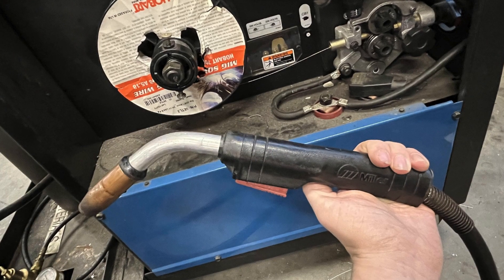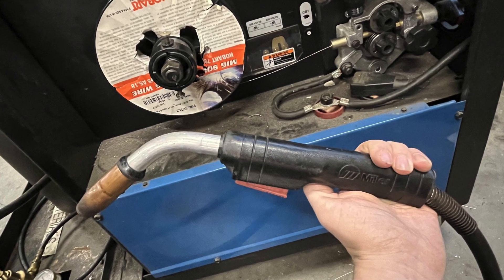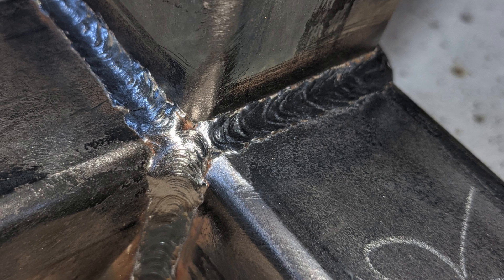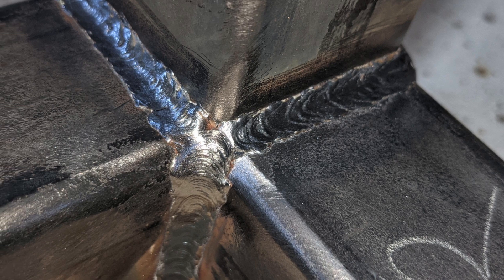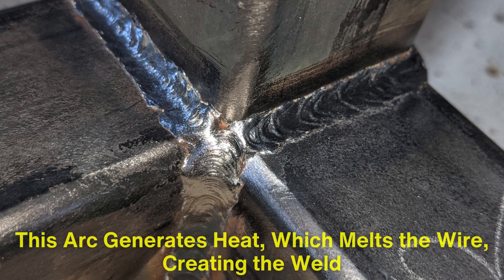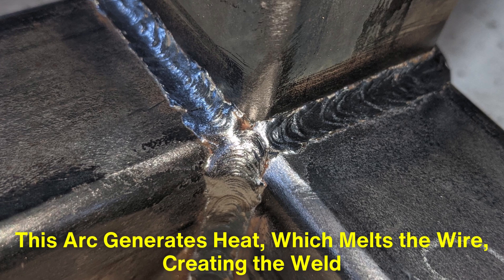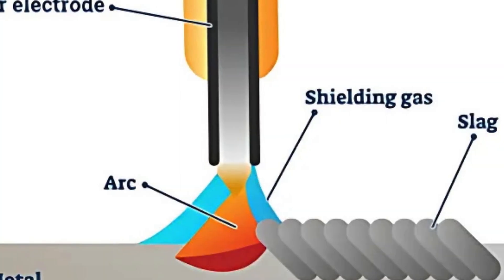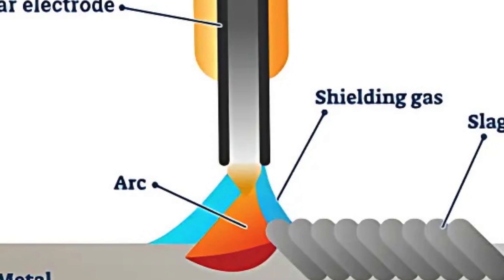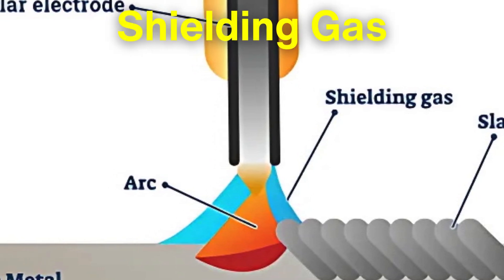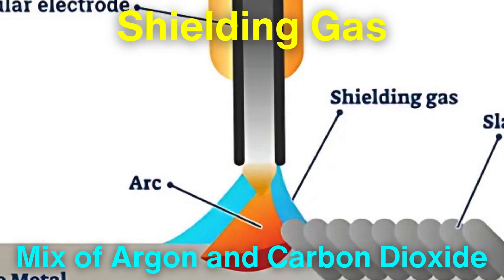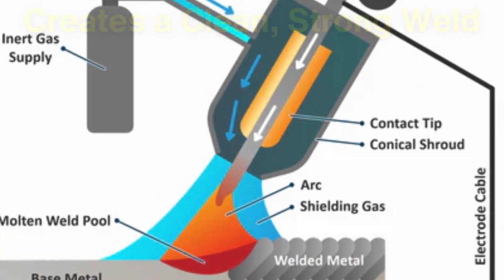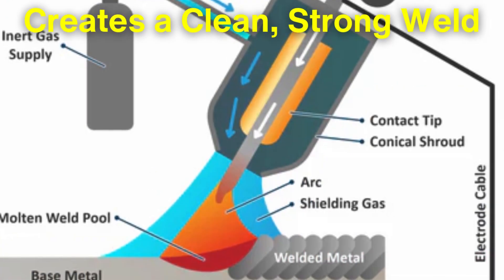The wire is automatically fed through the MIG gun, and when the welder pulls the trigger, an electric arc forms between the wire and the metal being welded. This arc generates heat, which melts the wire, creating the weld. To protect the weld pool from oxidation and contamination, a shielding gas — typically a mix of argon and carbon dioxide — is released through the gun, creating a clean, strong weld.